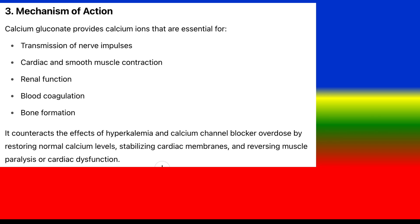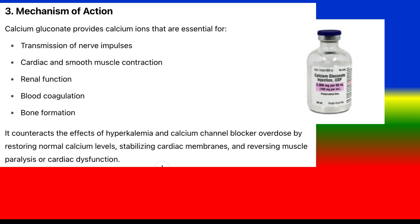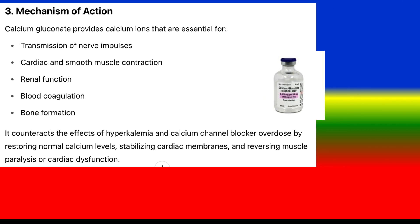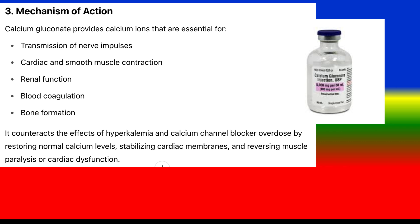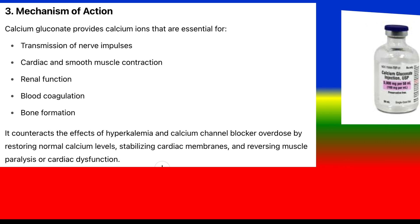Mechanism of action: Calcium gluconate provides calcium ions that are essential for transmission of nerve impulses, cardiac and smooth muscle contraction, renal function, blood coagulation, and bone formation. It counteracts the effects of hyperkalemia and calcium channel blocker overdose by restoring normal calcium levels, stabilizing cardiac membranes, and reversing muscle paralysis or cardiac dysfunction.